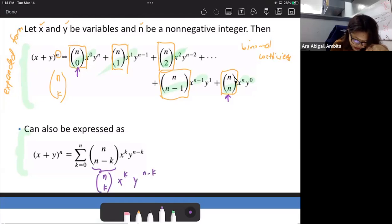Assuming na meron tayong x plus y quantity cubed, so pag nakapik na tayo ng isang x, so dalawang y na lang yung hindi natin na select. So if your k is equal to 1, then the y would be n minus k. So you get the point.